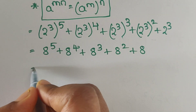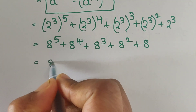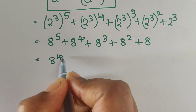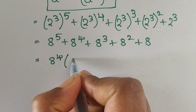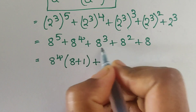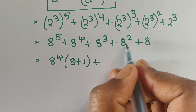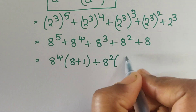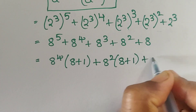In these terms we have a common factor of 8 power 4, so we take out 8 power 4 as common. Writing out the remaining terms gives us 8 plus 1. Then in the next two terms we have common factor 8 power 2, so we take out 8 power 2 as common, leaving 8 plus 1 plus 8.